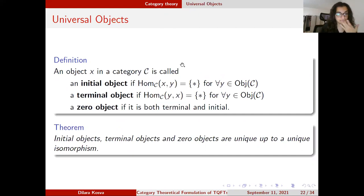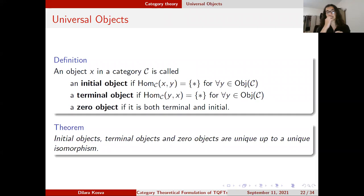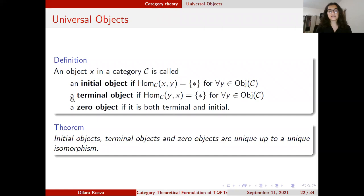We also have universal objects. In a category, if from some object X to every object Y there is exactly one morphism, then X is called an initial object — the set Hom(X,Y) is a singleton for every Y. A terminal object reverses this property: there is exactly one map going from any Y to X. A zero object is both initial and terminal. These objects are unique up to unique isomorphism — an easy theorem to prove — and this uniqueness is what makes them universal and important in categorical constructions.